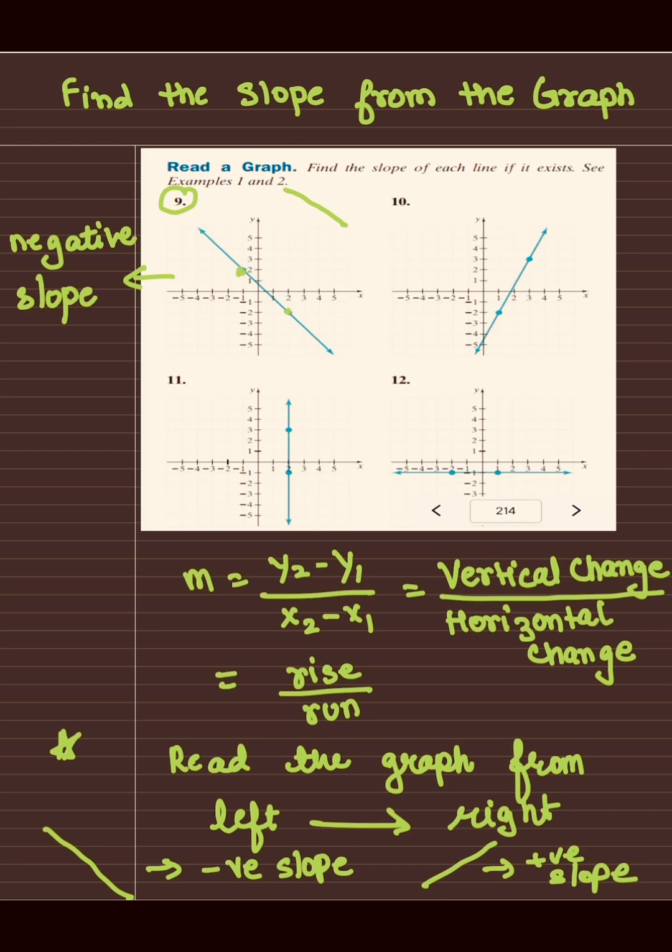Now let's see what is the rise over run. Rise is the vertical change. So see how many units do you need to move down in order to reach up to that point, and I can see that it's four vertical units.